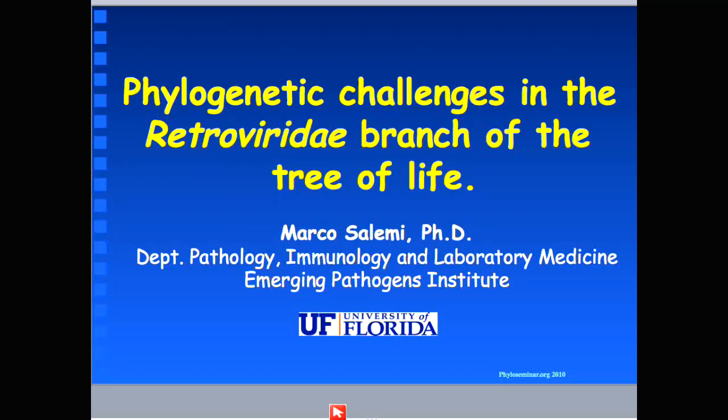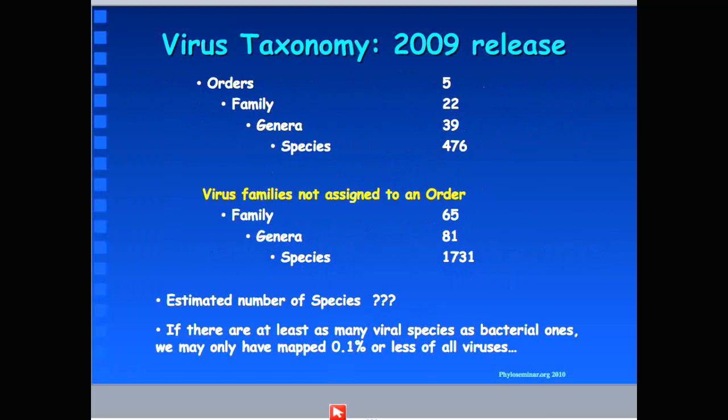As Eric just said, what I'm going to discuss today is phylogenetic challenges in the Retroviridae branch of the tree of life. We're going to discuss virus evolution, virus taxonomy, and the peculiar problems that arise when we investigate the molecular evolution of fast-evolving viruses — retroviruses and RNA viruses in particular — and the special challenges they pose in integrating them within the general tree of life.